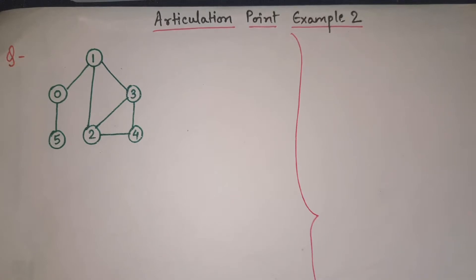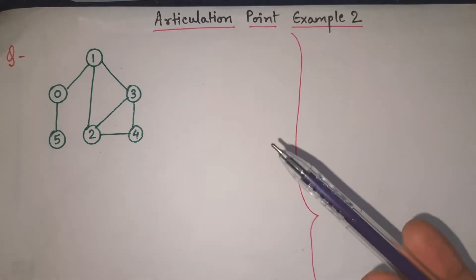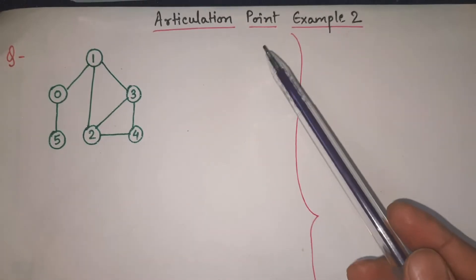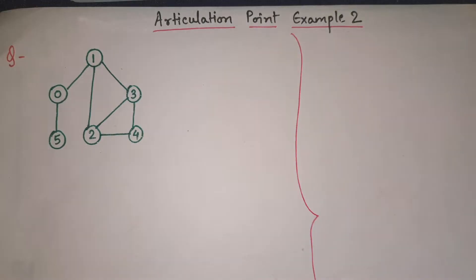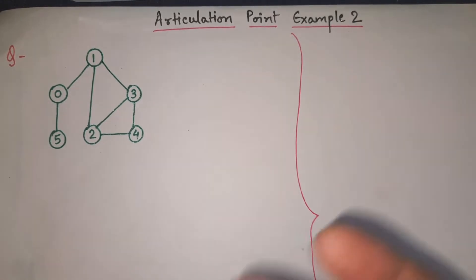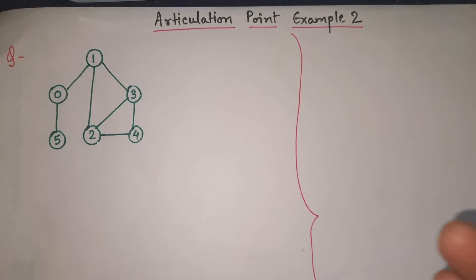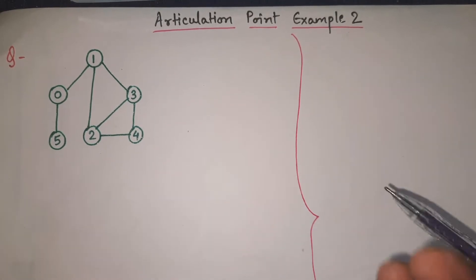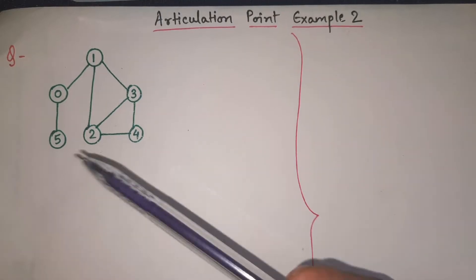Hey guys, welcome back to our channel CAC Concepts with Parenda. In our last video I explained what articulation points are, what bi-connected components are, and how to find the articulation point and bi-connected components step by step. I gave definitions, formulas, and a complete example. I hope that made things clear. Here I am explaining one more example.